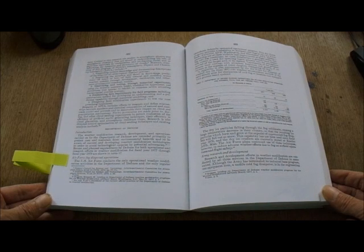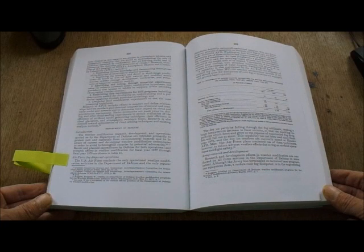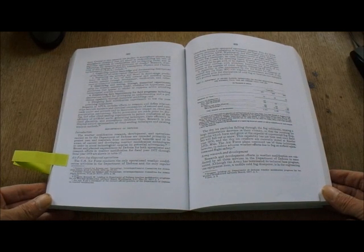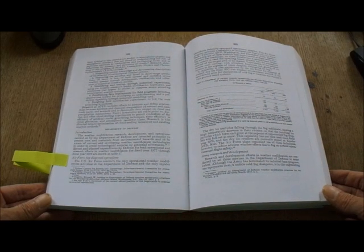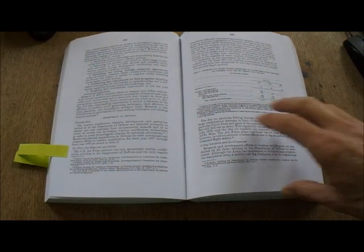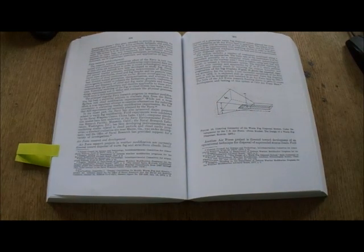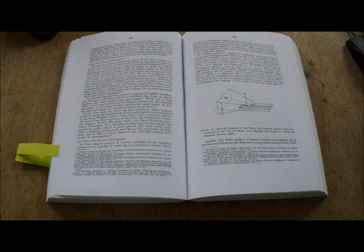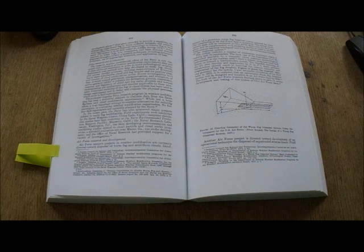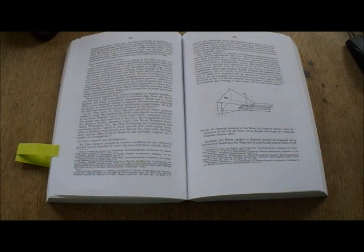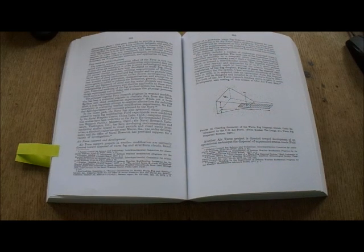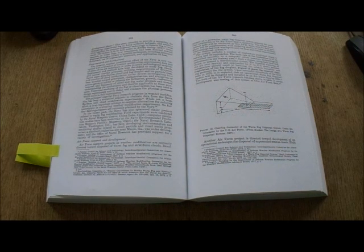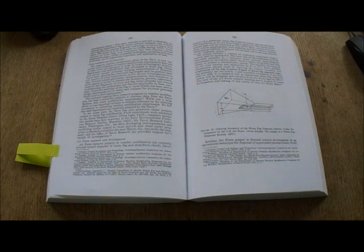Army Research and development efforts in weather modification are conducted by all three services in the Department of Defence to some extent. Although the Army has terminated its technical base programme, one equipment item, a mobile cold fog dissipator, is in the engineering development phase. This gear, intended to provide a capability for dissipating supercooled fog at Army airfields, helipads and artillery sites, employs the propane dispenser technology to remove fog in local areas. The system is to be field tested in Alaska during 1978. Army research on warm fogs, now terminated, had been directed towards dispersal through a variety of possible techniques including helicopter downwash, use of hygroscopic materials and application of heat.